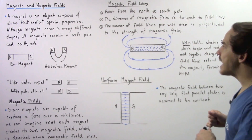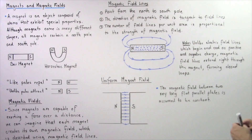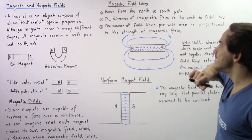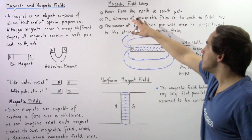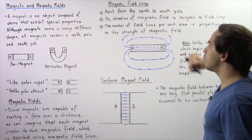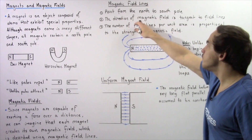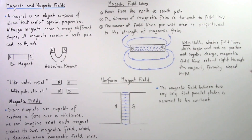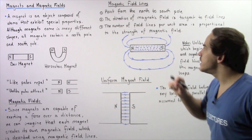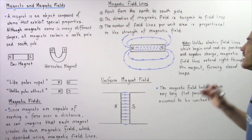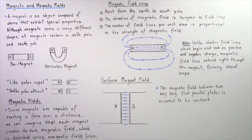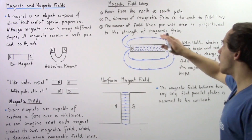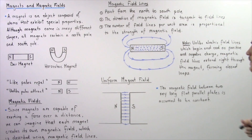There are three things we should know about magnetic field lines. First, magnetic field lines point from the north to the south pole. Second, the direction of the magnetic field is always tangent to the field lines. Third, the number of magnetic field lines per unit area is always proportional to the strength of the magnetic field.